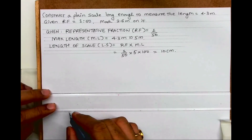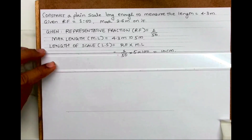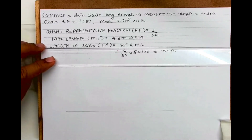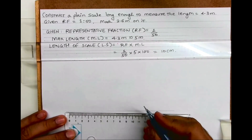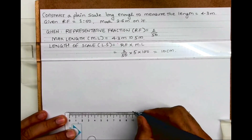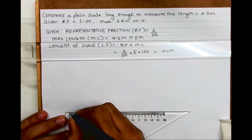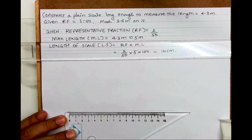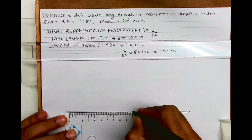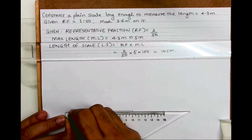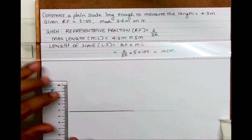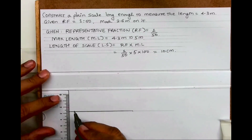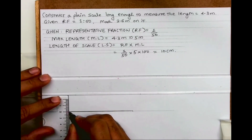I will draw a 10 centimeter long line. Remember, in a plane scale we take a height of 5 millimeters; in a diagonal scale we take a height of 50 millimeters. Remember, it is not fixed — you can take whatever you are comfortable with. I'll take a height of 5 millimeters.